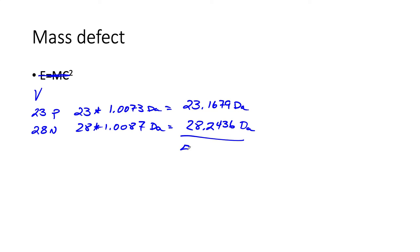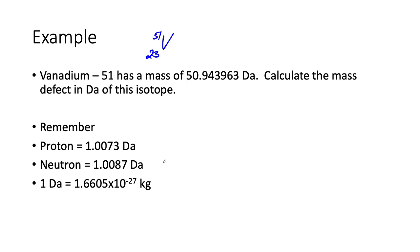You should come up with 51.4115 daltons, and that's the mass it should be if we didn't take up any energy for binding. Now our actual mass is 50.9439, and I'm going to subtract the two.